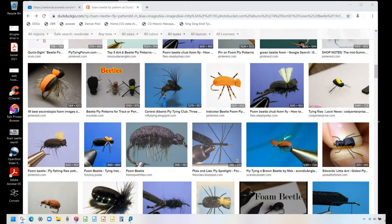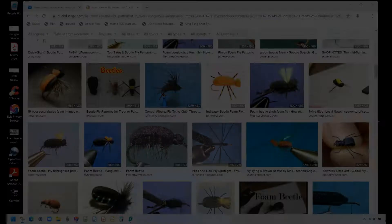The dry fly high floating style pattern of beetle predominates, and they're made mostly from foam and deer hair as shown here. All have rigid legs that are for the most part very difficult to move in the currents.